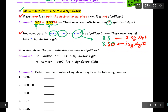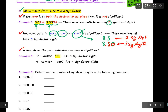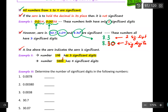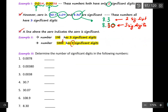The next rule is the line above the zero. In some numbers, you will see a line above a certain zero — this line indicates that the zero is significant. For example, in 190 with a line above the zero, there are three significant digits. In 5800 with a line above the second zero, there are four significant digits.